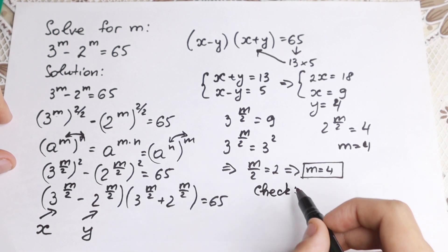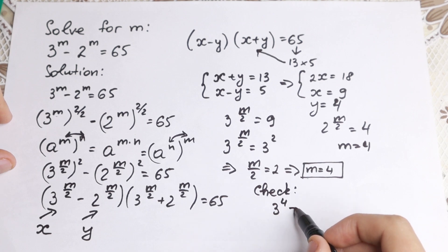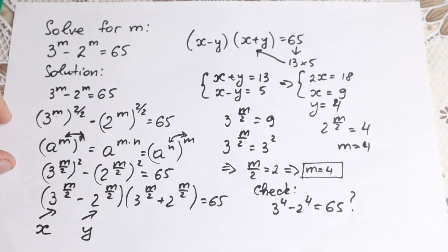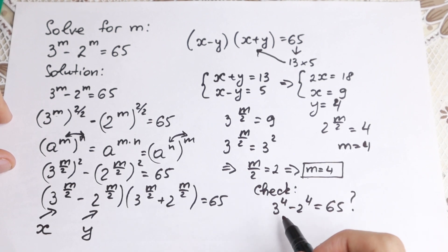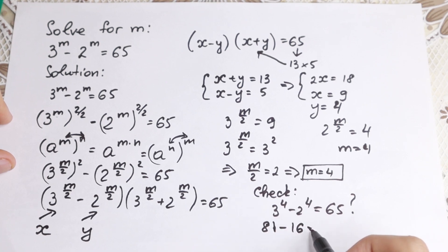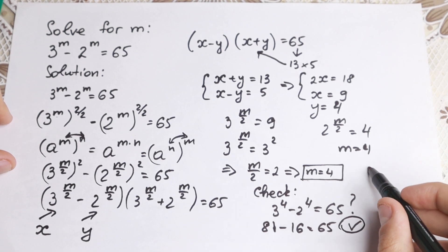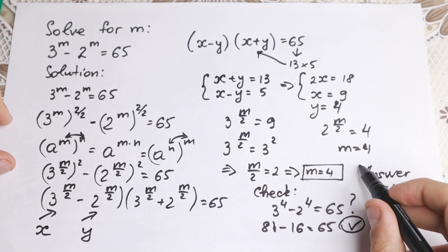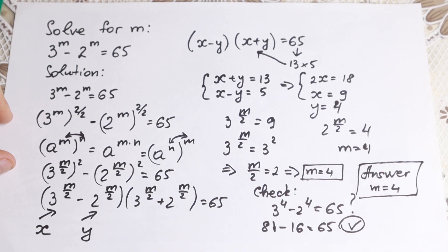Let's check it real quick. We have 3 to the 4 minus 2 to the 4 equal to 65. Let's check if that's correct or not correct. We all know that 3 to the 4th is 81, 2 to the 4th is 16, equal to of course 65, which is absolutely correct. So our answer, our answer m equal to 4. This is our answer.